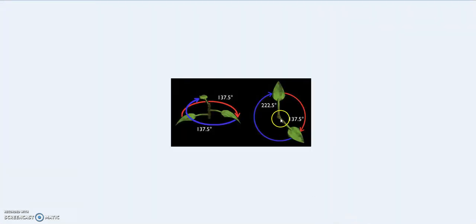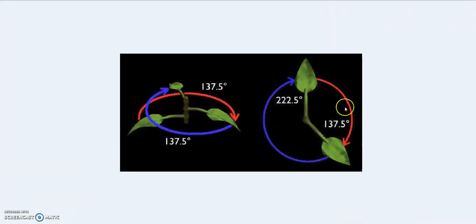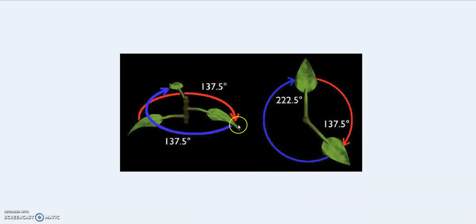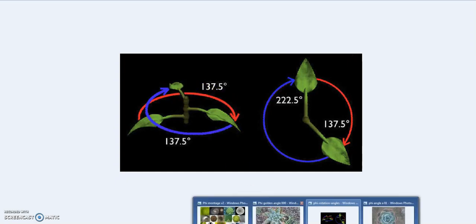We're going to talk about the golden angle, which is 137.5 degrees to 222.5 degrees. You find it in nature, and the reason why it's so important is that when plants grow at this particular ratio and twist like this, one leaf will not cast a shadow on the other — or it will reduce the shadow — so it maximizes the amount of sunlight the plant gets. It's a very important way for nature to work.